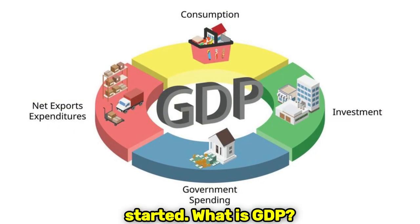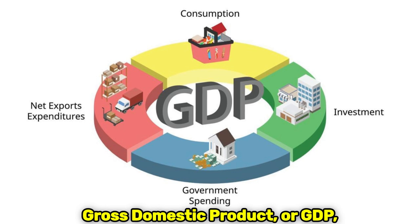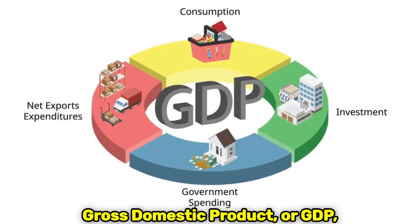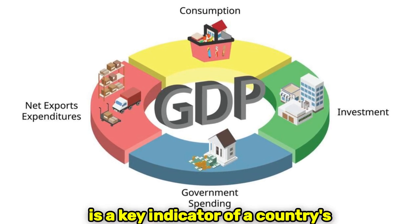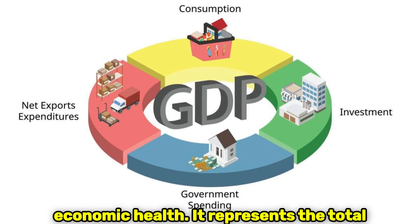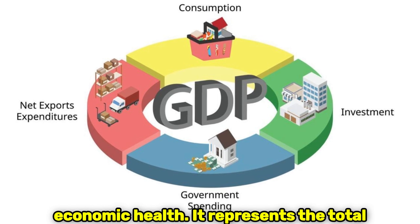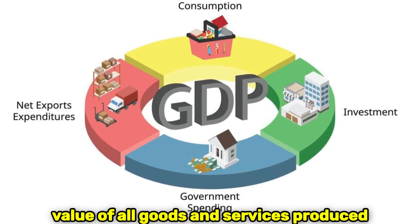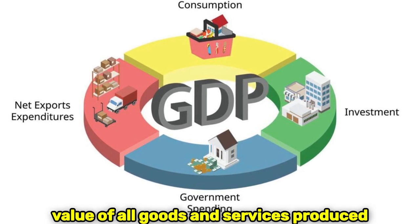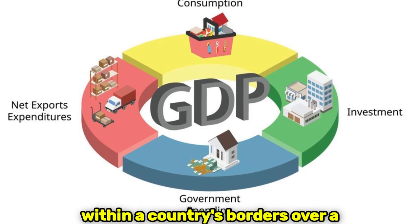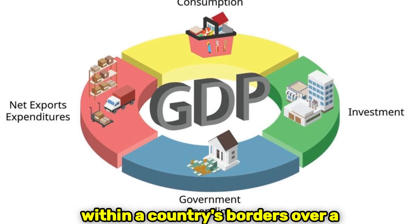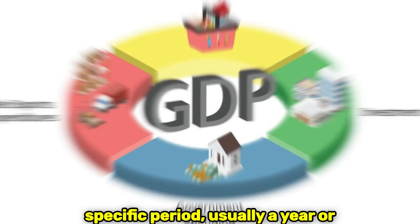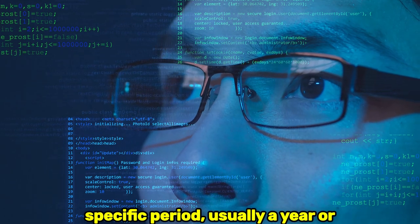What is GDP? Gross domestic product, or GDP, is a key indicator of a country's economic health. It represents the total value of all goods and services produced within a country's borders over a specific period, usually a year or a quarter.